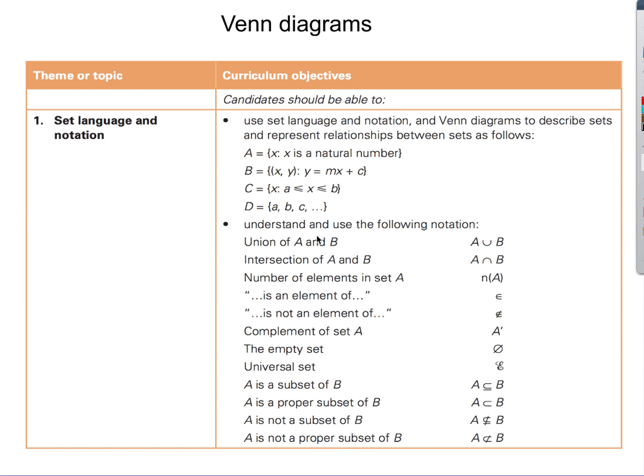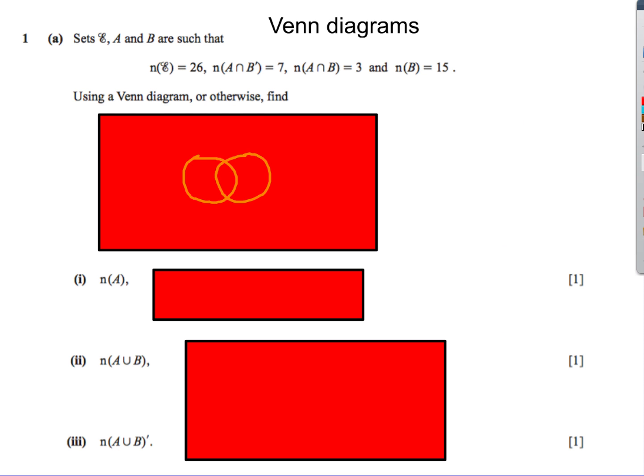We're looking at Venn diagram questions and some indices questions. This is from Additional Maths — the Cambridge IGCSE — and it probably overlaps quite a lot with some other syllabuses as well. Venn diagrams: this is the syllabus content, all about set language and notation.